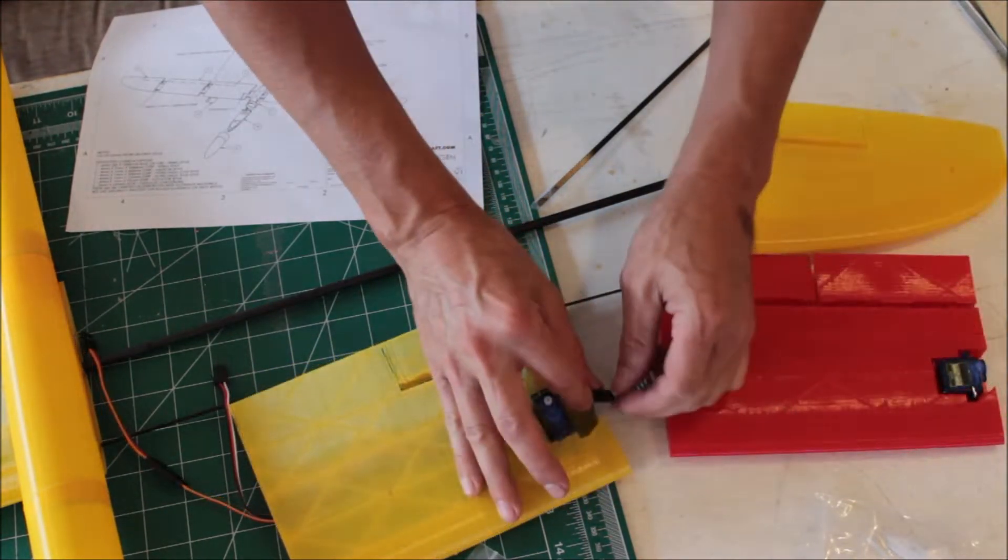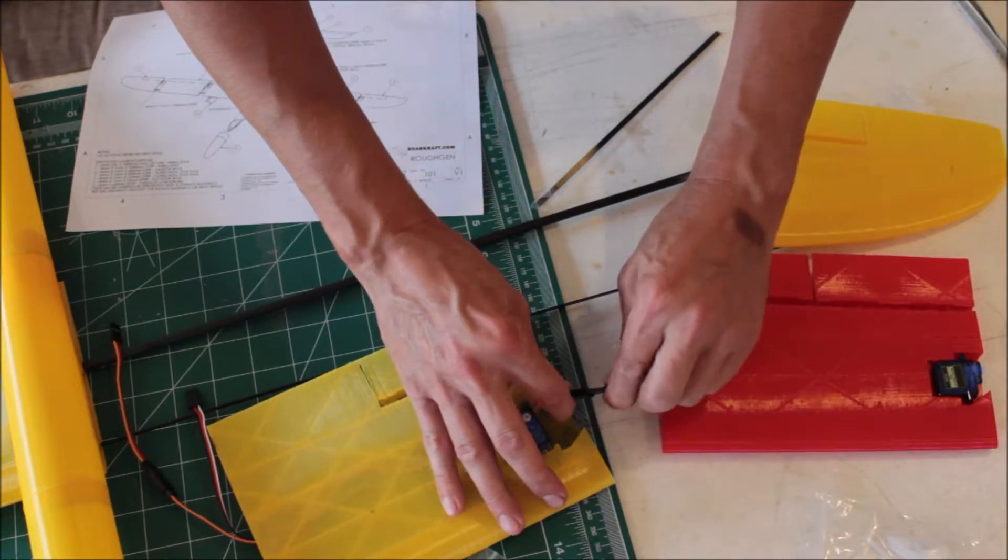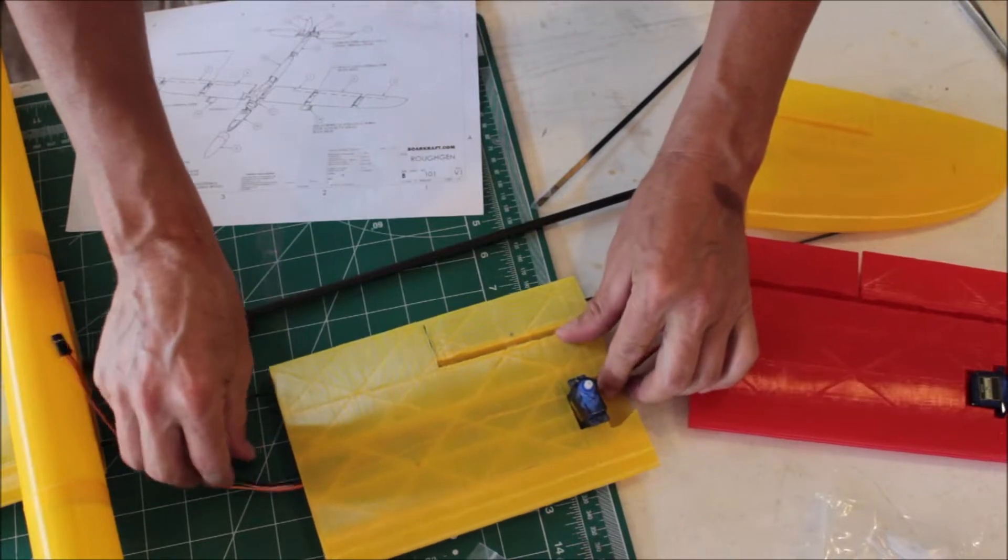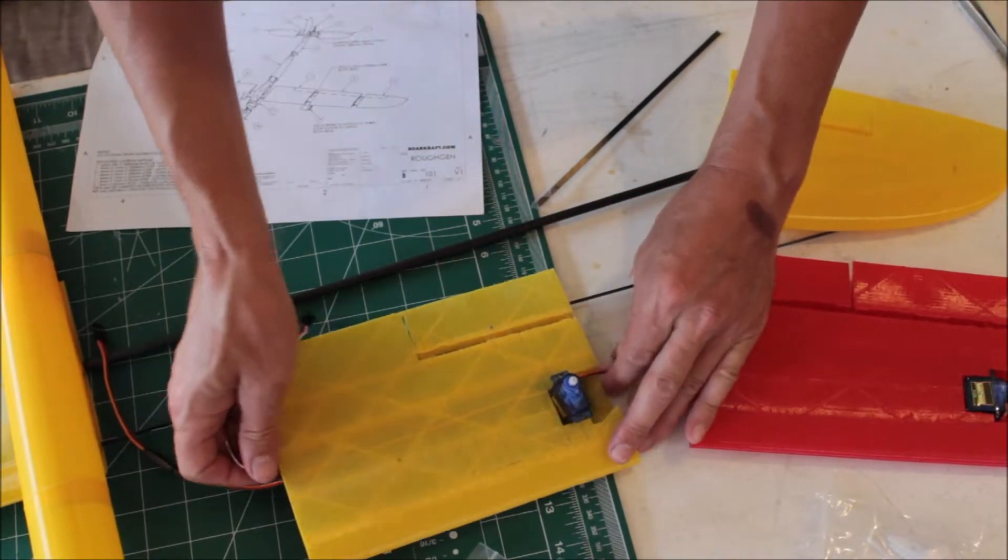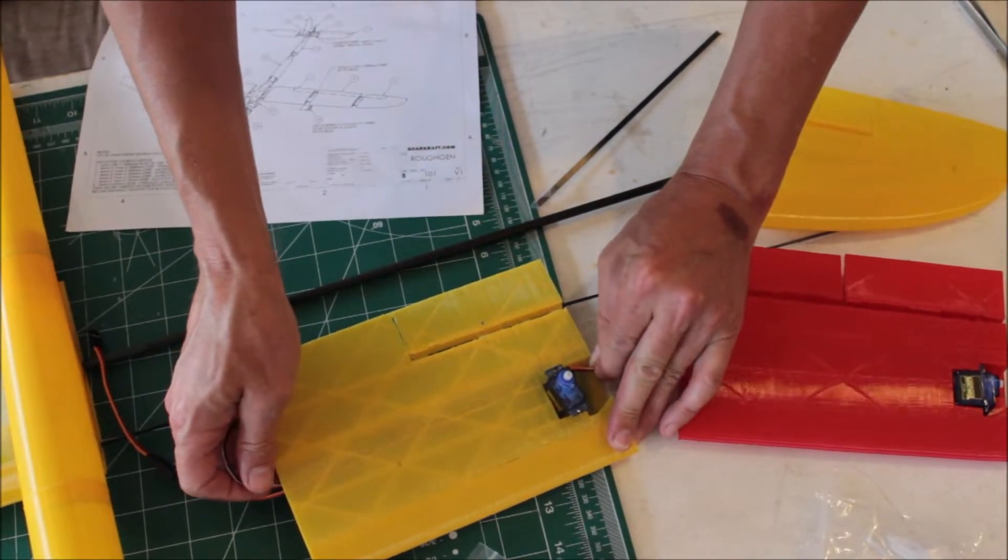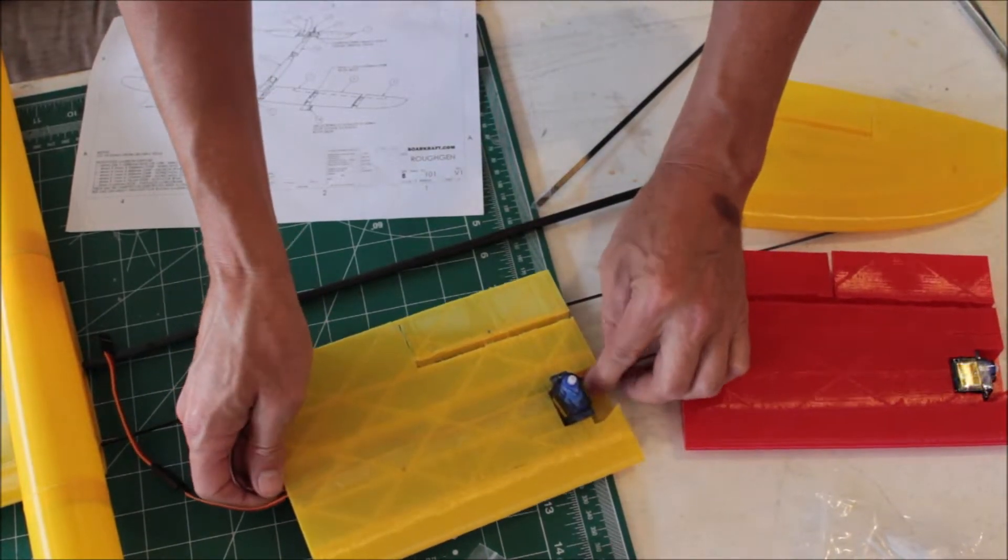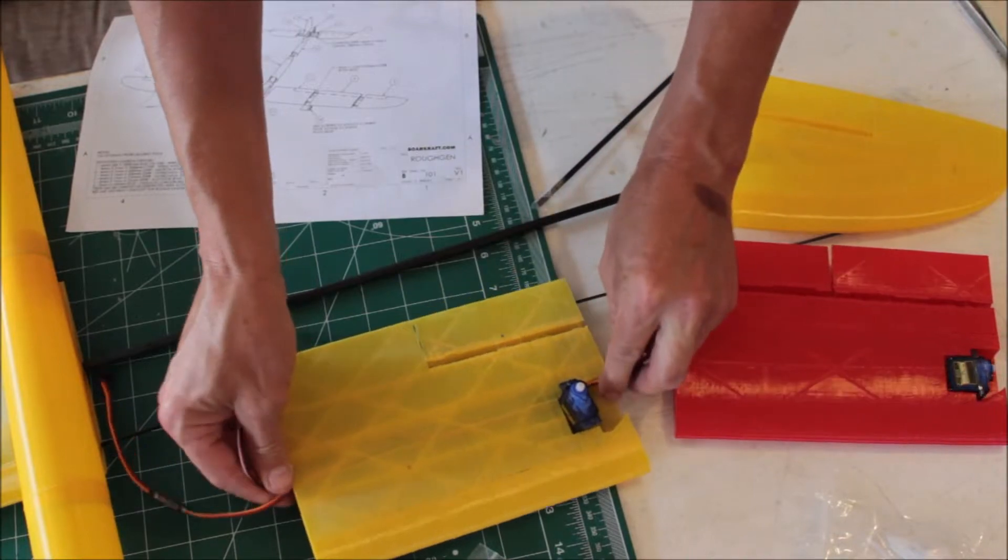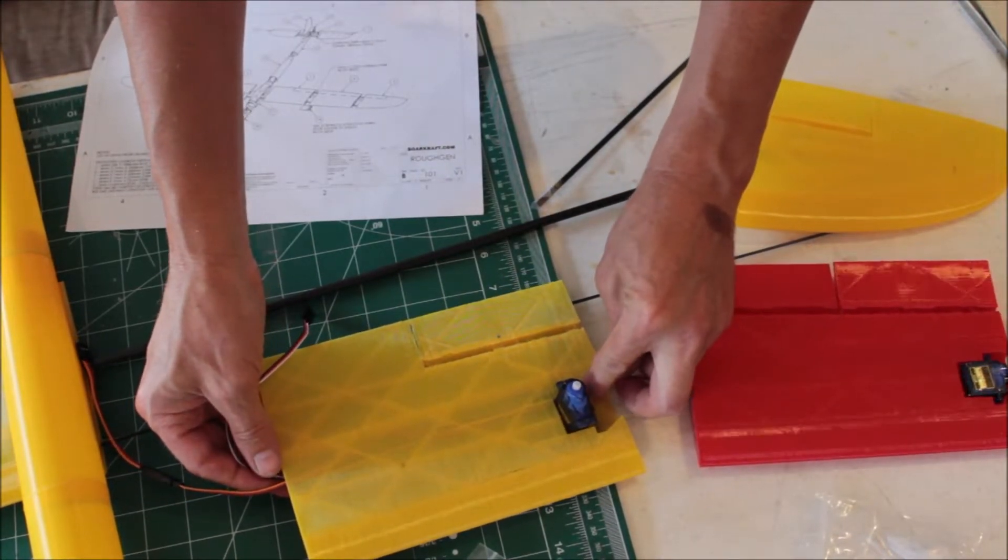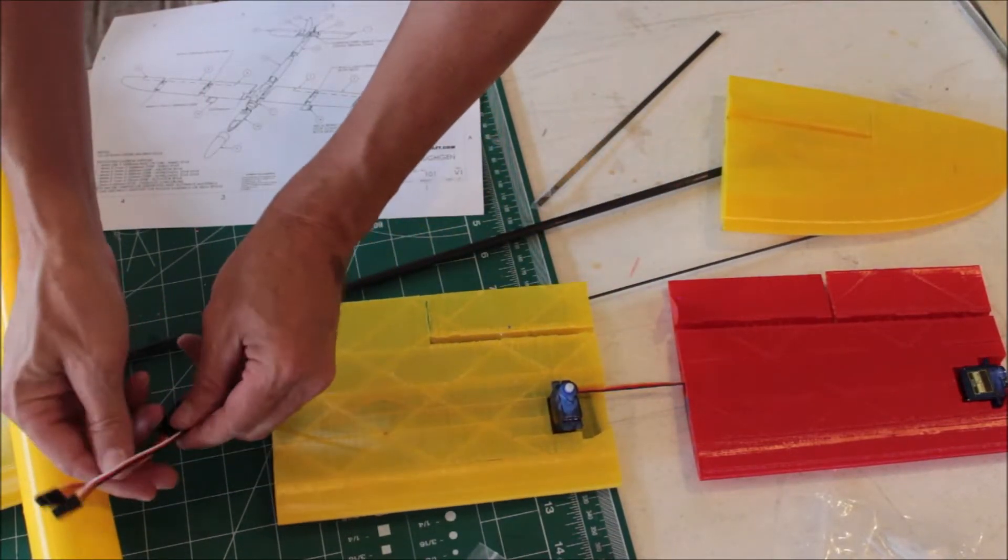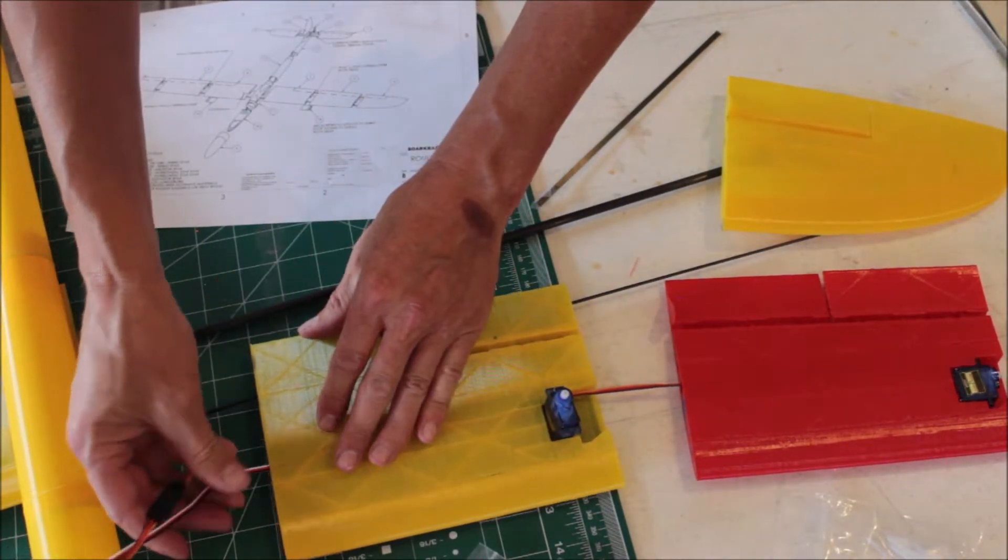Then we're going to feed the aileron servo so that it is roughly the same length. The connector needs to be in this area here.